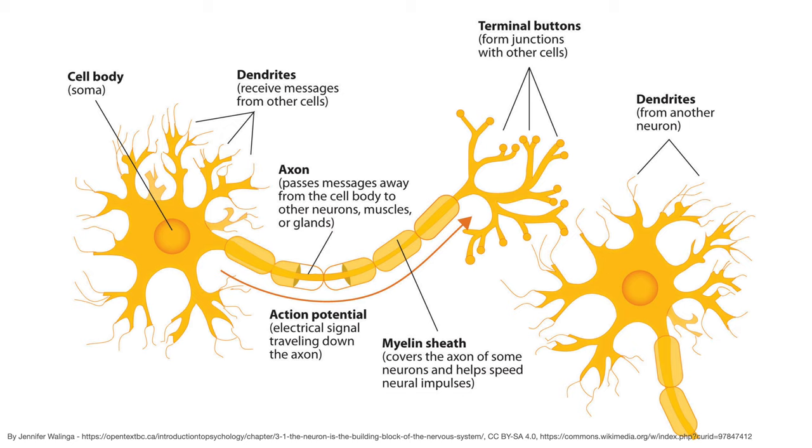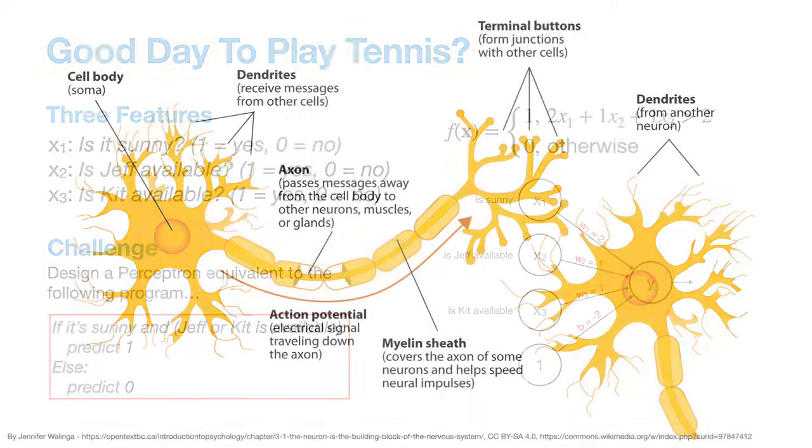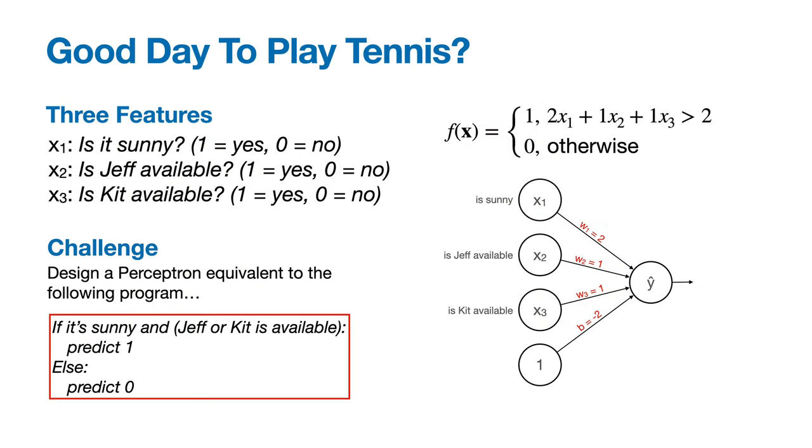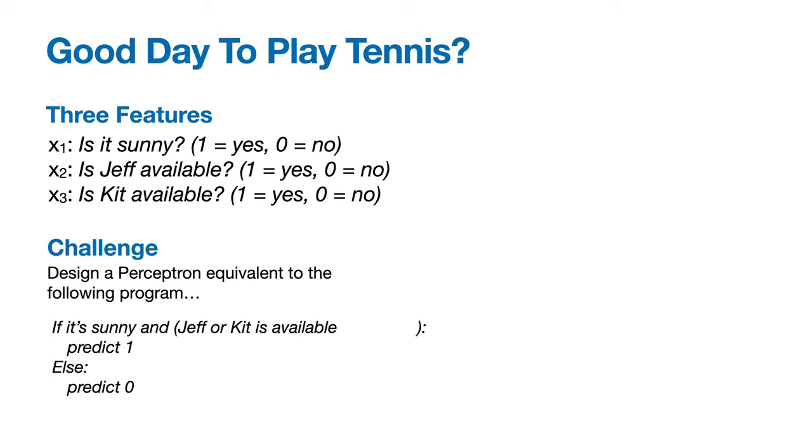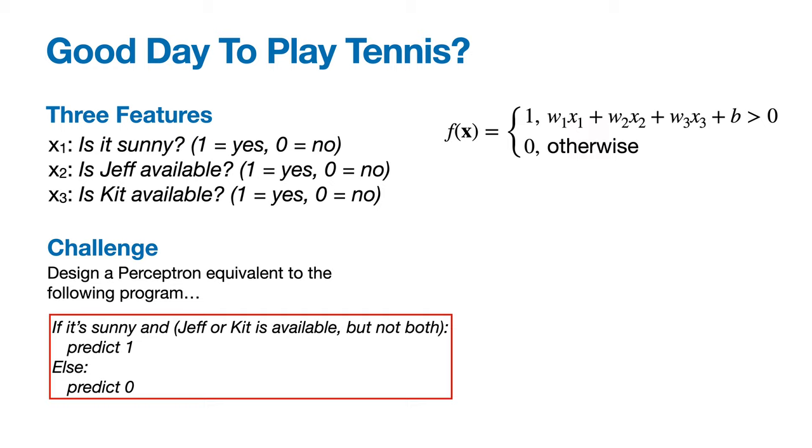Notice how similar this is to our model of a perceptron. Alright, here's another challenge that builds off our previous challenge. You've noticed that when Jeff and Kit are both available, they tend to play each other, leaving you partnerless. So you need to devise a new perceptron that predicts one if it's sunny, and Jeff or Kit is available, but not both, and zero otherwise.